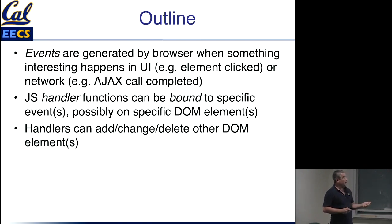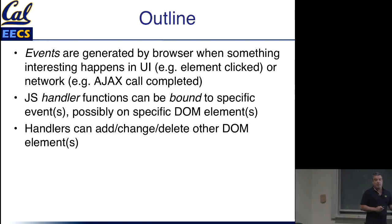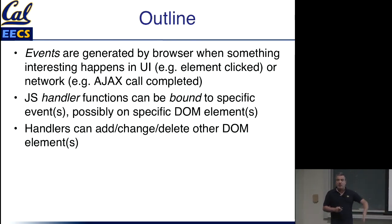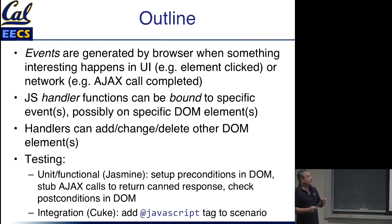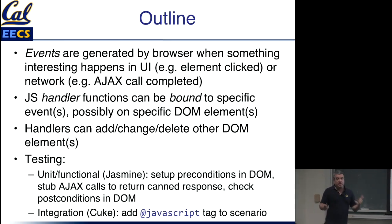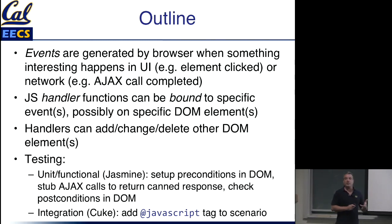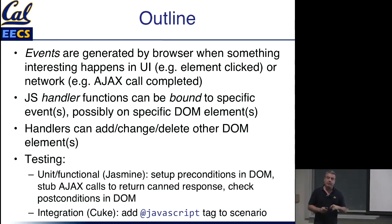We have handlers which you write, and you determine which events you want the handler to respond to. The handlers, when they run, can do various things, including modifying the DOM in interesting ways — they can add, change, or delete other DOM elements, change the page appearance, or make calls out to the server to do more Ajax-y stuff. And then how do you test all this? Because you do have to test JavaScript. Unless you're doing the most trivial things, you really need to think of it as code that has to be tested separately.